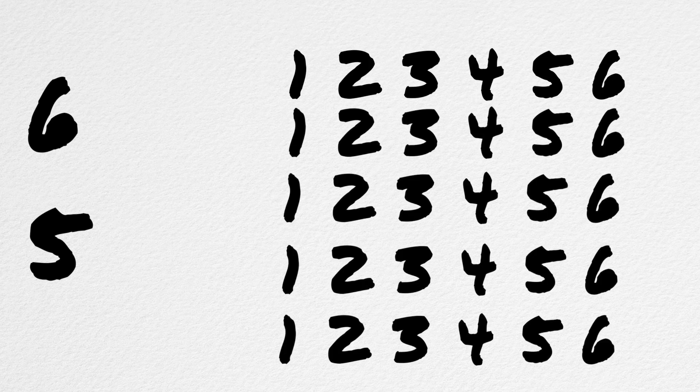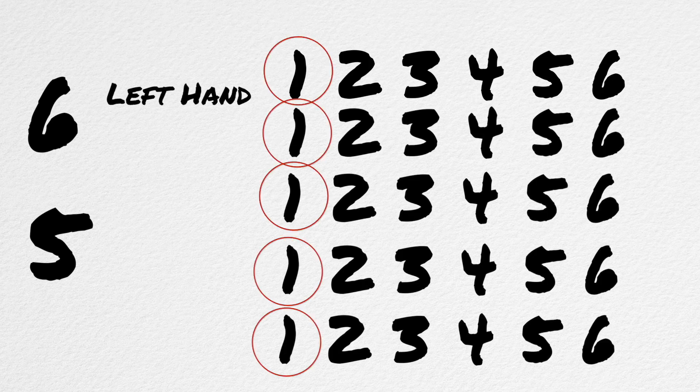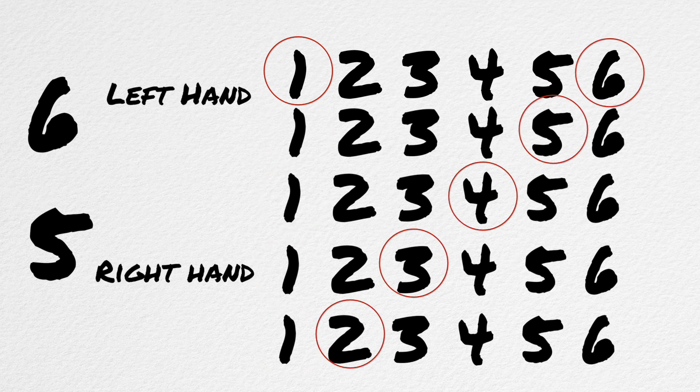So, let's try one more difficult one: six against five. All the same rules apply. We'll create six columns and five rows. The left hand takes all the ones, and the right hand will take every fifth note.